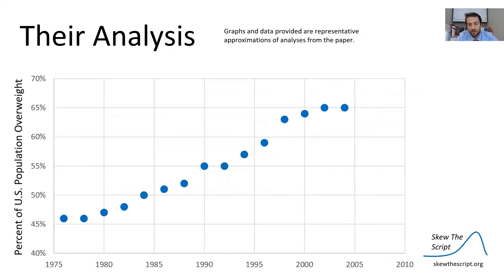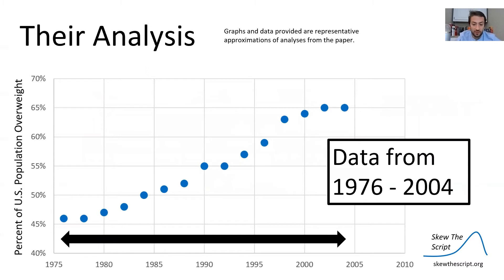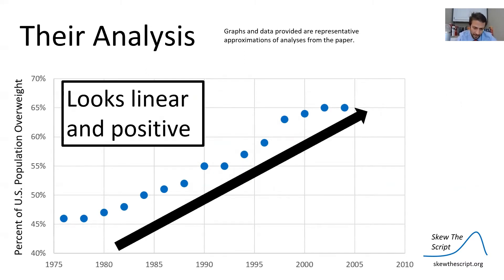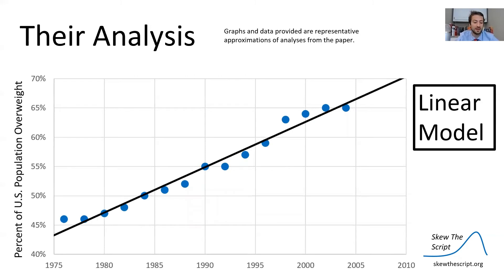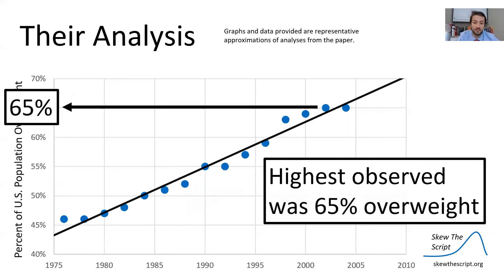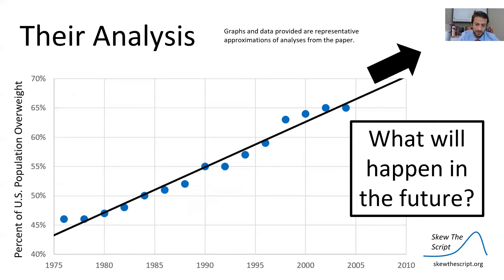Let's return to that article and think about their analysis. They essentially have a dataset with the x-axis as years and the y-axis as the percent of the US population that is overweight. The data runs from 1976 to 2004, and the trend looks linear and positive — as time went on, the percentage of the population that was overweight increased in a linear fashion. We can draw our line of best fit, and it fits the data reasonably well. The highest observed value in this dataset was 65% overweight, which is important to note.